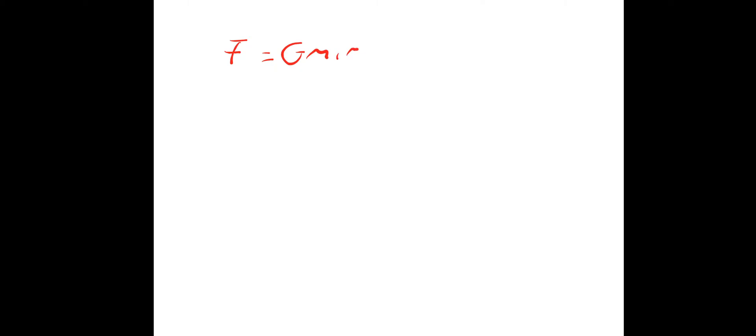From the previous lesson, we know that the gravitational force is equal to G times mass 1 times mass 2 divided by distance squared. We also know that at the surface, the gravitational force that you would experience is equal to m times g — that force is otherwise known as weight. As you can see we've got two equations for F, and what we can do is make them equal to each other.